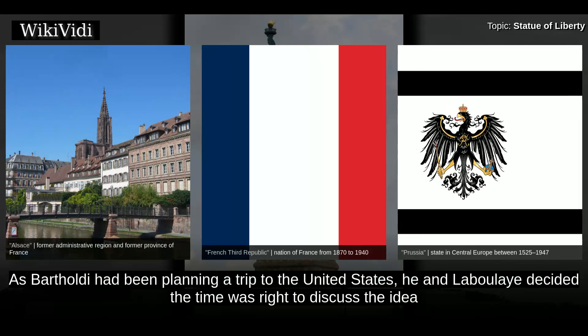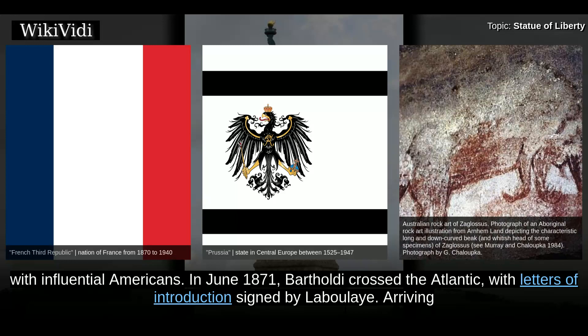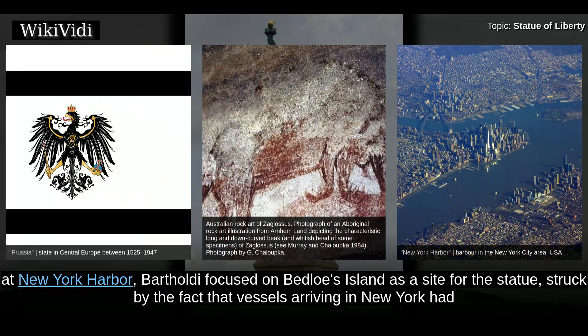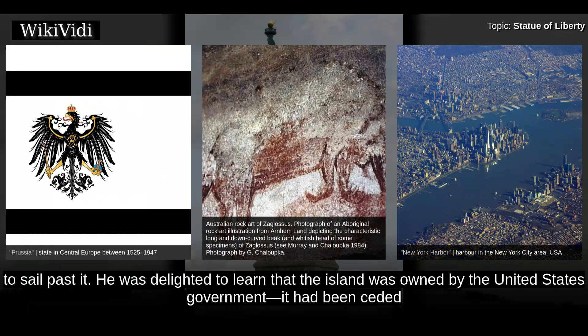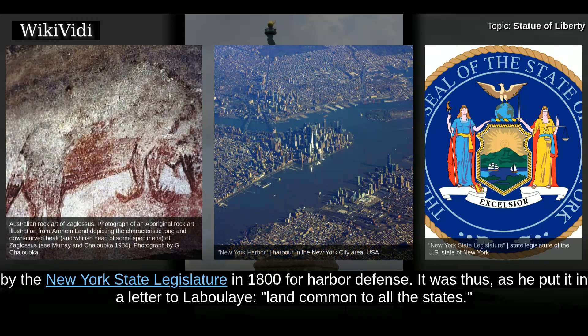As Bartholdi had been planning a trip to the United States, he and Laboulaye decided the time was right to discuss the idea with influential Americans. In June 1871, Bartholdi crossed the Atlantic with letters of introduction signed by Laboulaye. Arriving at New York Harbour, Bartholdi focused on Bedloe's Island as a site for the statue, struck by the fact that vessels arriving in New York had to sail past it. He was delighted to learn that the island was owned by the United States government, having been ceded by the New York State Legislature in 1800 for harbour defence.